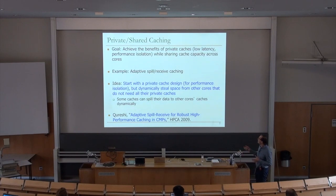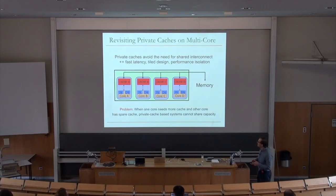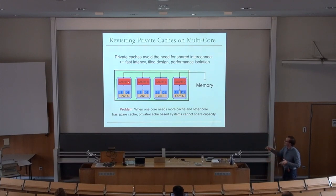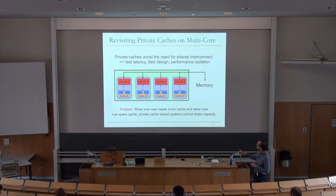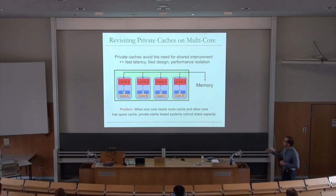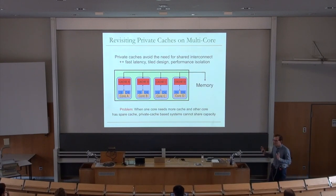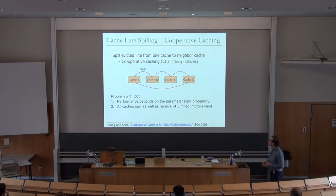Caches can spill their data to other cores' caches dynamically. If you think about private caches: you get fast latency, a tile design, and performance isolation. The problem is when one core needs more cache and some other core has spare cache, a completely private system cannot share that capacity. So we're going to make it less private.